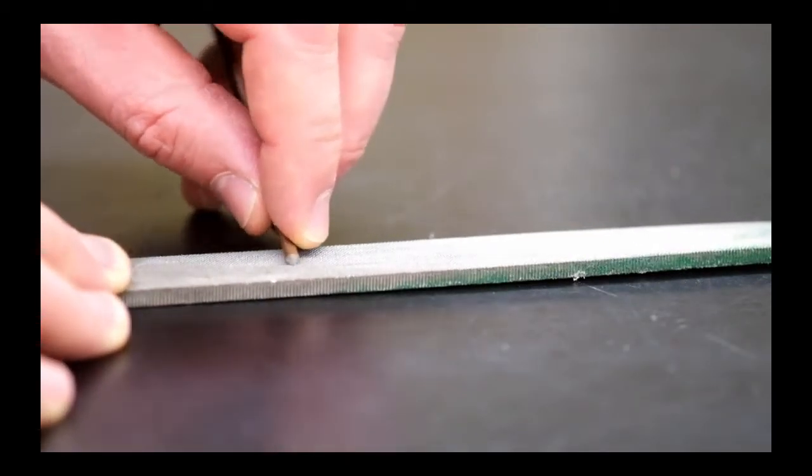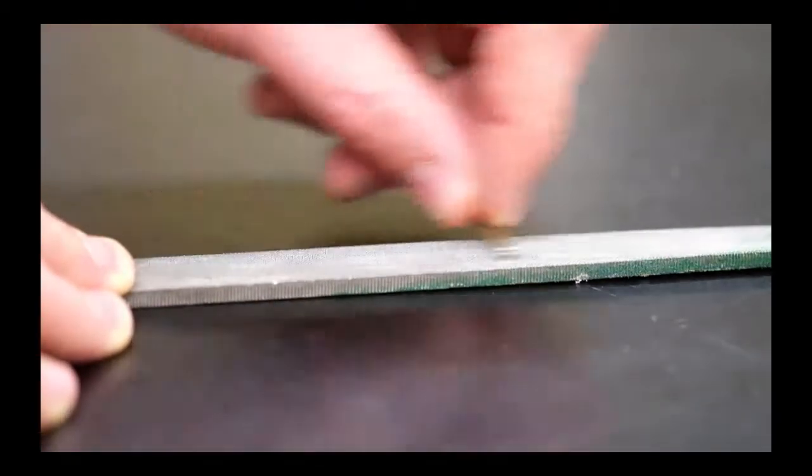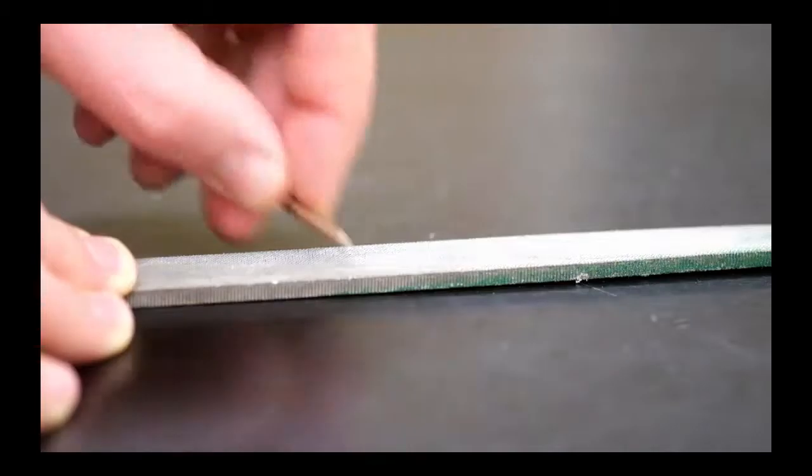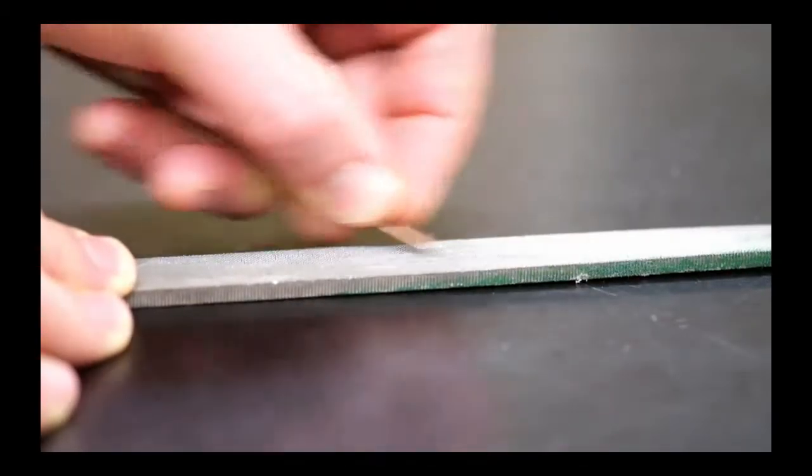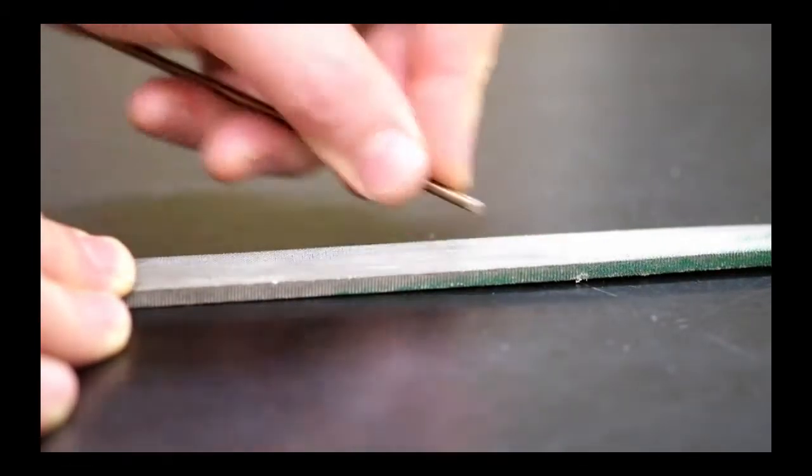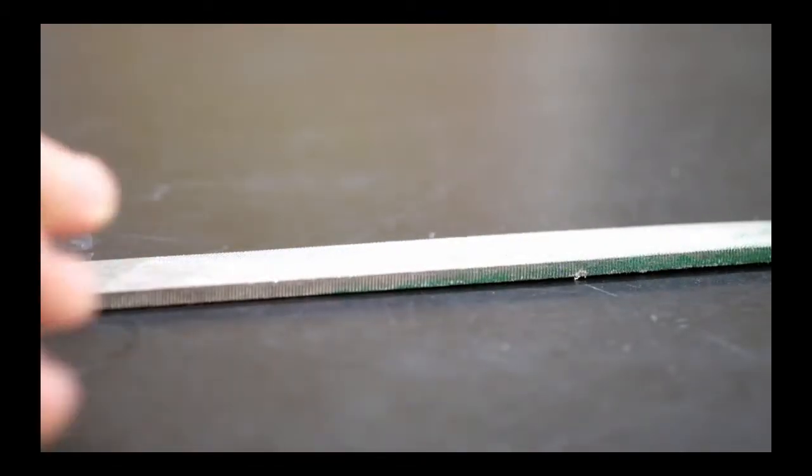Now the next way you can do it is you can put the file on the table and you can just move the axle along the file. This gives you a lot more control and makes it so it's less likely that you will get injured. That's a good thing.